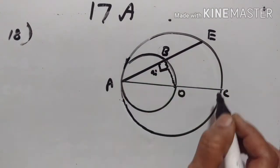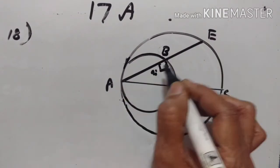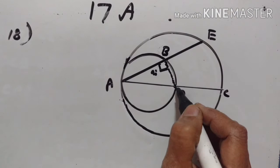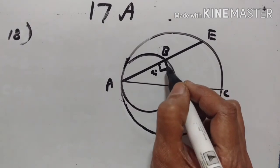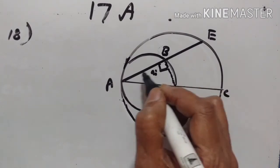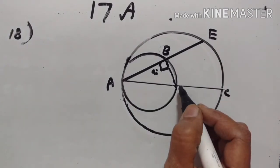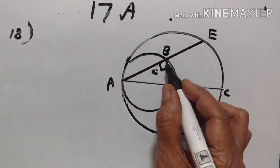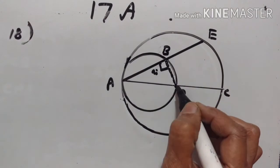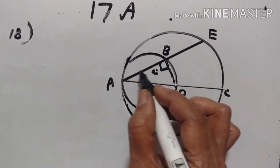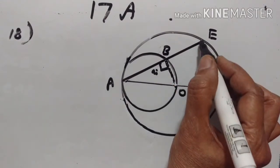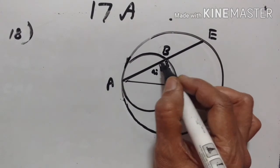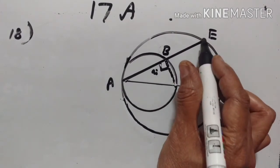In the bigger circle, AE is the chord and OB is perpendicular to AE. A perpendicular from the center of a circle to the chord bisects the chord. Therefore AB is equal to BE.